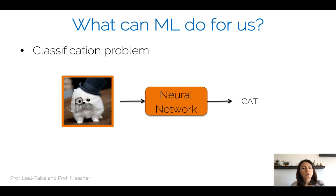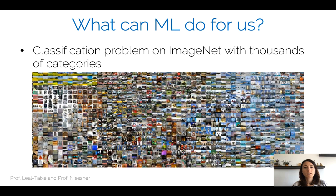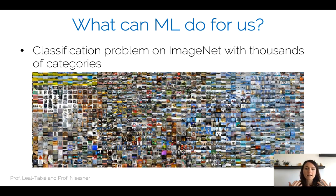This is a classification problem. There's a fixed number of classes for which we train the neural network, and at test time we have an input image and the neural network picks one of these classes as an output. We can do this at a really large scale — on ImageNet we can tackle the classification problem on thousands of categories. This is not a restricted problem; it can classify and understand a bunch of images across up to thousands of categories.